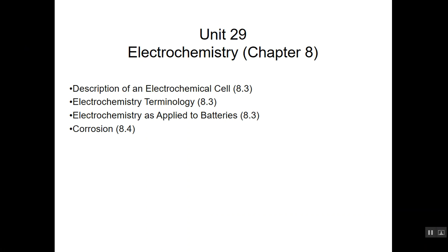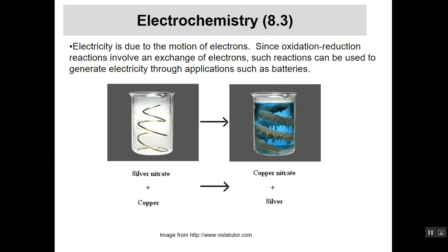We're going to look at a couple different things. One is a description of electrochemical cells, probably better known to you as batteries. We're going to look at some electrochemical terminology—anodes, cathodes, things of that nature—and look at how electrochemistry is applied to batteries. Also look at corrosion, because corrosion really is an application of oxidation reduction reactions.